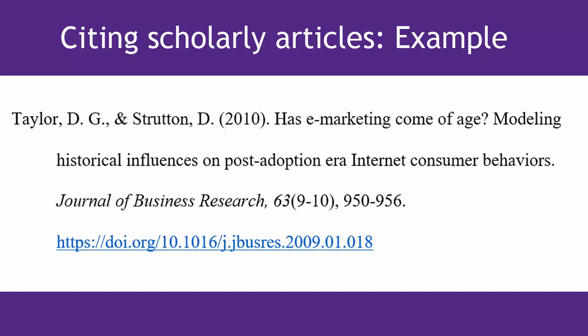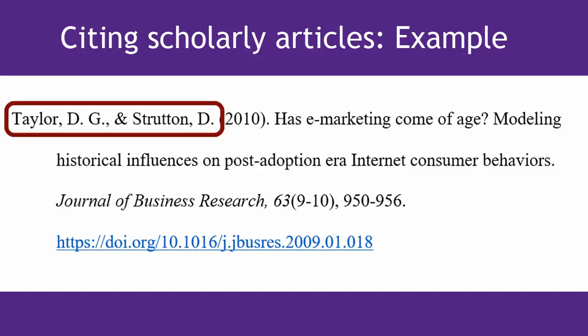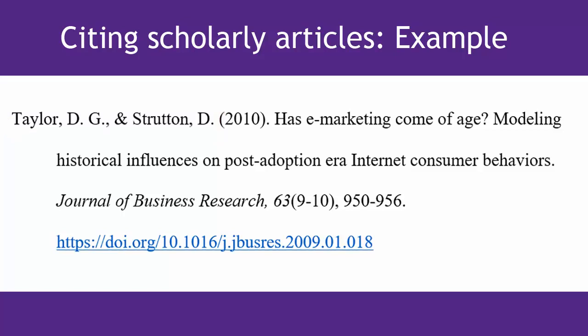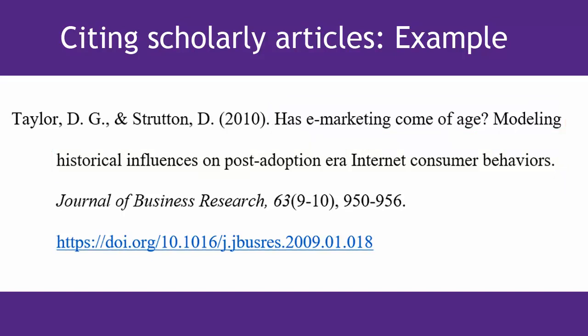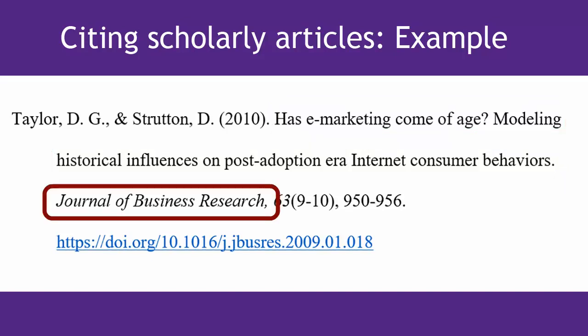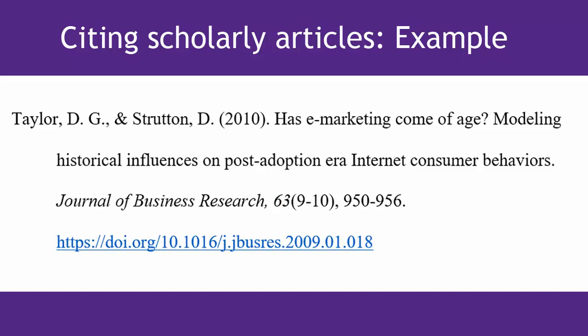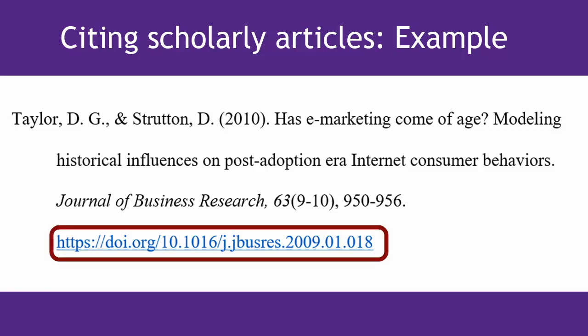Now that we've gathered all of the information, we can create our citation. Use an ampersand rather than the word AND between two authors, and use the last name and initials of the authors only, not the full first name. Note that the article title is capitalized just like the book title was, where we only capitalize the first word of the title and the first word of the subtitle, plus proper nouns. However, each significant word in the journal title is capitalized because that's a proper noun. Notice also how we format the volume, issue, page numbers, and DOI to match the correct example.